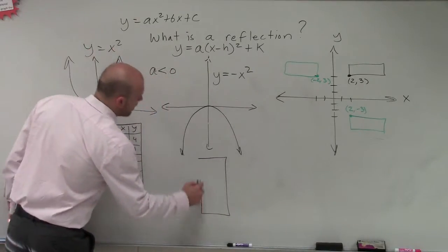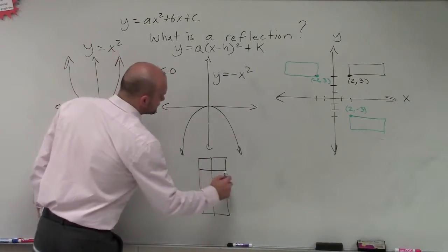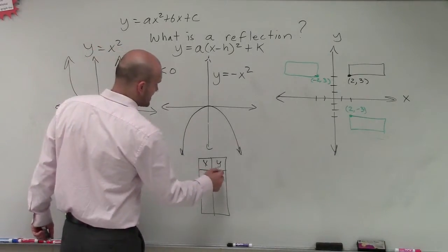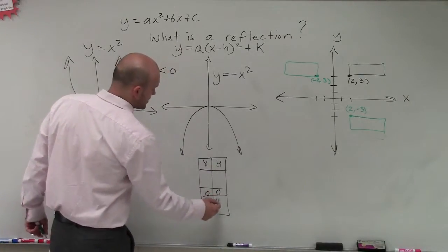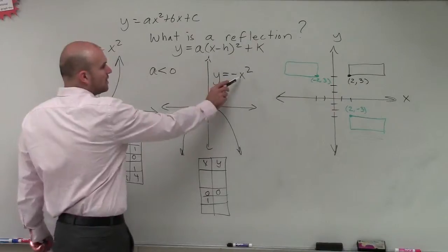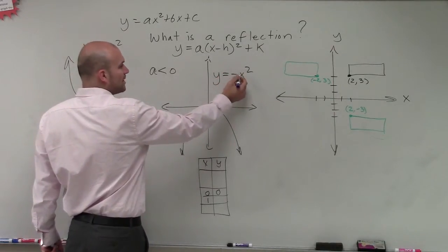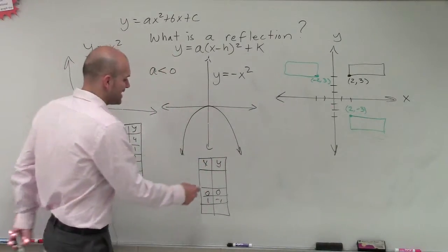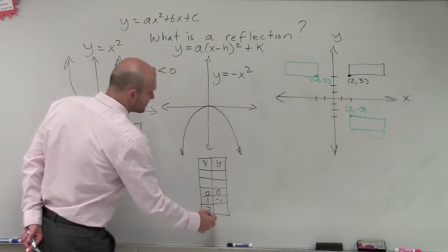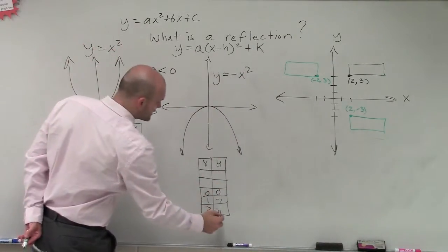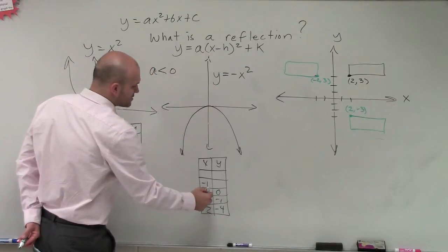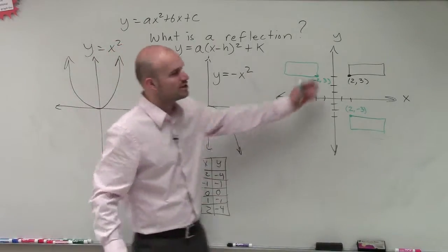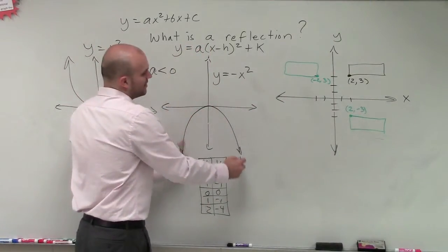Now, if I do a table of values for y equals negative x squared, we'll have the same points: 0, 0. And then 1—well, 1 squared is 1, but now we're multiplying this by negative 1. So that now turns negative. Notice, my y-coordinates are now turning all negative. It doesn't matter. I'm going to square everything. 2 squared is 4. 4 times negative 1 is negative 4. So now, every single one of my y-terms is always going to be negative. And since I'm turning them all negative, you can see that now I'm going to graph my graph downward.